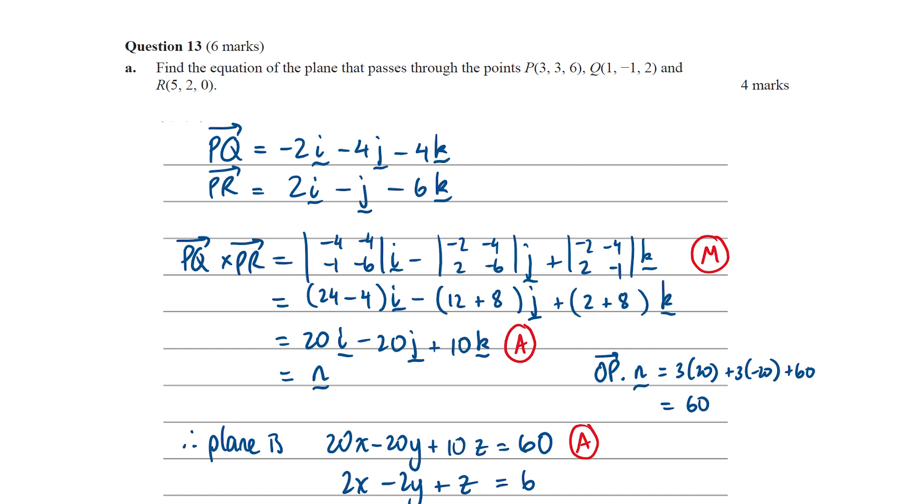Here we've got 20x minus 20y plus 10z, and on the other side, we're going to have a constant. That constant can be found by taking the dot product of the normal vector and the position vector of any point in the plane. I could say here do OP·n, calculate that, and that gives me 60. If I did OQ·n or OR·n, that should give me the same value and that's a good check. Here, okay, my plane equation—probably simplify it—and there we are.